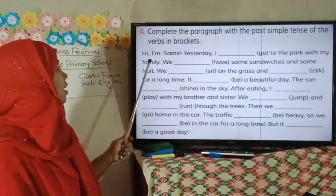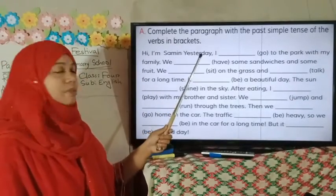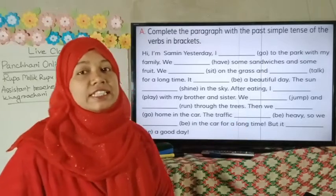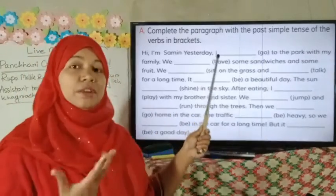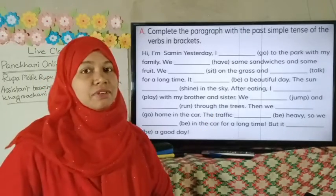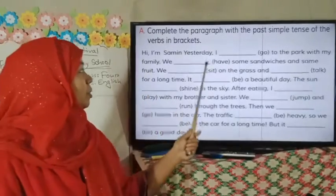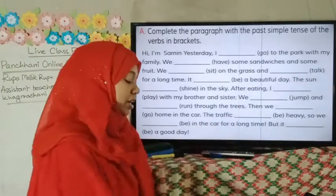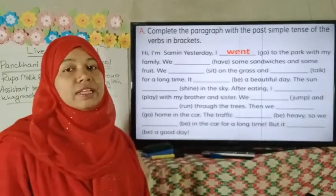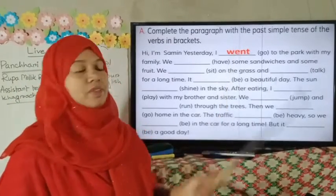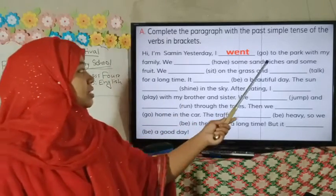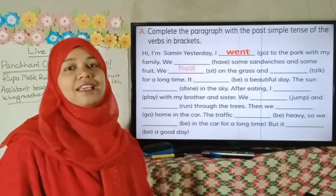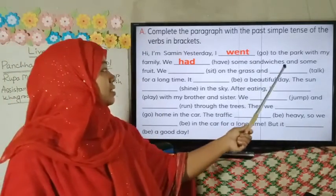Look, here it says: 'Hi, I am Shamim. Yesterday, I [go] to the park with my family.' Here we have the word 'go' in brackets, so we have to write the past simple form. Go is the present form and 'went' is the past form. So: 'Yesterday I went to the park with my family.' Next: 'We [have] some sandwiches and some fruits.' Have is the present form and the past form is 'had'. So: 'We had some sandwiches and some fruit.'